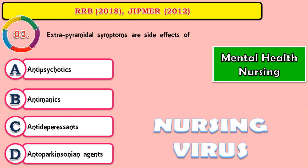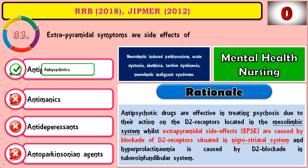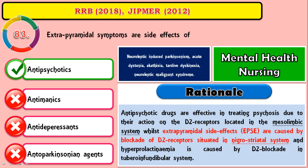Question 83: Extrapyramidal symptoms or side effects are caused by which drugs? The correct answer is antipsychotics. These drugs are effective in treating psychosis due to their action on D2 receptors located in the mesolimbic system. The extrapyramidal side effects are caused by blockage of D2 receptors situated in the nigrostriatal system. Hyperprolactinemia is caused by D2 blockage in the tuberoinfundibular system. A list of EPS symptoms is provided for reference.